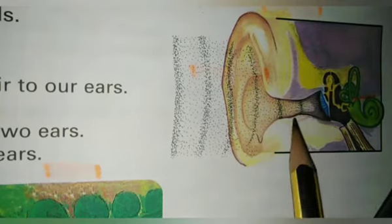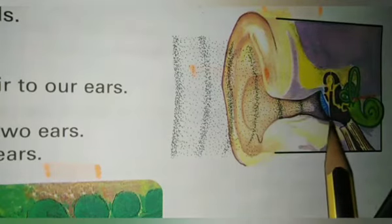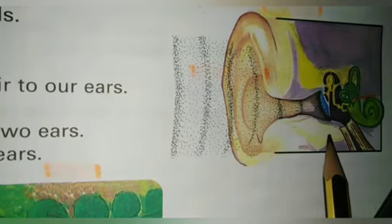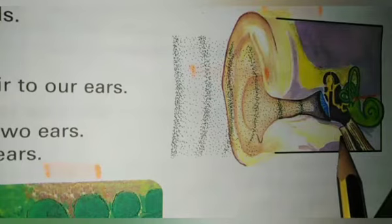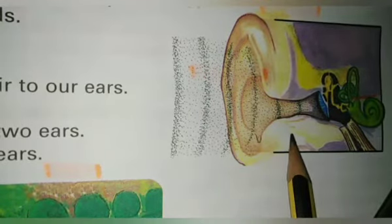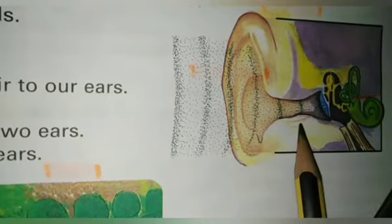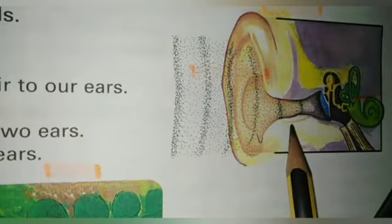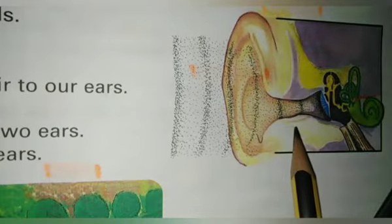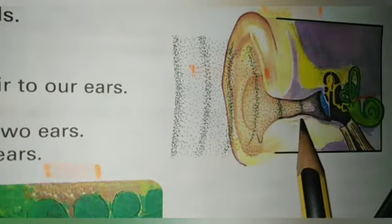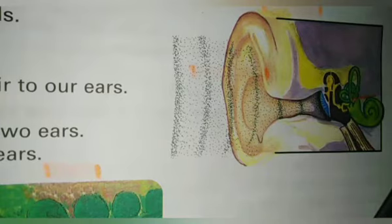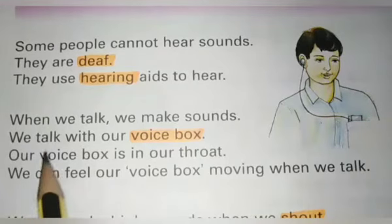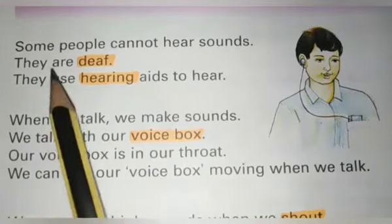We have two ears. Elephants and rats have two ears. Cats and dogs have two ears. By the help of ears, we are able to hear.